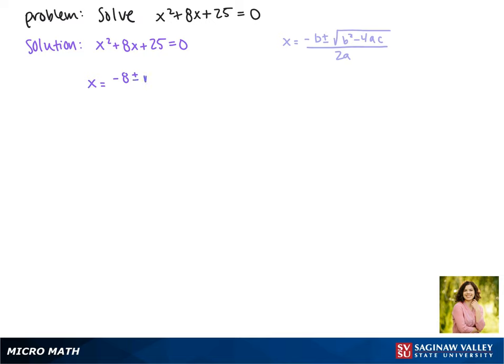We get x equals negative 8 plus or minus the square root of 8 squared minus 4 times 25 times 1 divided by 2 times 1.